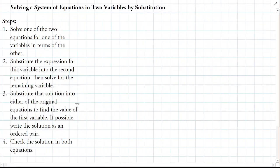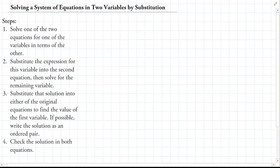Hello everybody. For this video I am going to talk about how to solve a system of equations in two variables by substitution. These are the steps outlined in the module that I have uploaded, and we are going to follow these steps by solving an example. Suppose we have a system of equations: negative X plus Y equals negative 5, and 2X minus 5Y equals 1. We have two equations and two unknowns, and we are going to solve this by substitution.